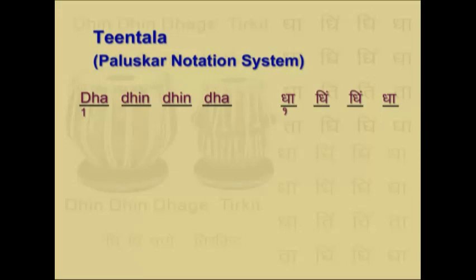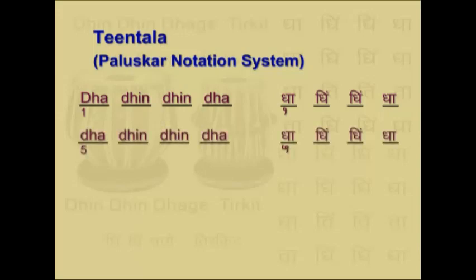Being the first beat of tala — Sam — you have to write number one below the first dha. In the next line, you again write dha din dhinda. The fifth beat represents a clap again, so you write number five below it. In the Paluskar system, you don't write the number of the clap; you write the number of the beat. So on the fifth beat, which is the second clap, you write five under it.